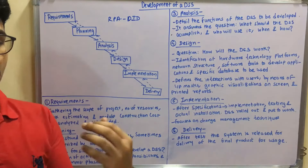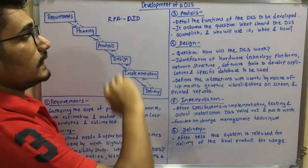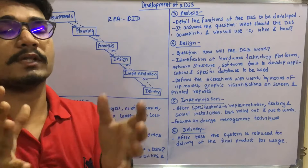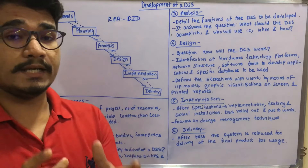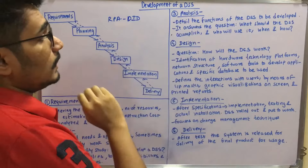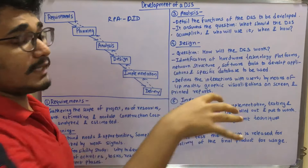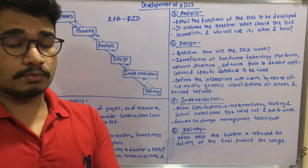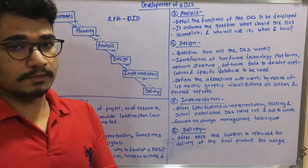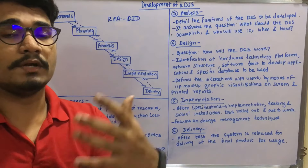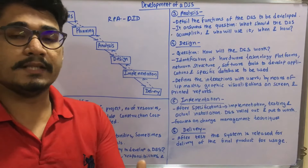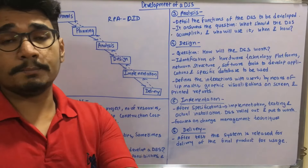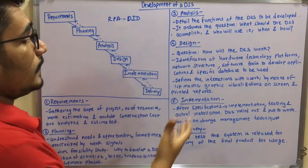In the Analysis phase, we have to analyze all the requirements. The detailed functions of the DSS have to be developed here — each of the models or functions with specific details. It answers the questions: what should the DSS accomplish after its development, who will use it, and how are they going to use it? These questions need to be answered during analysis, as knowledge workers may be questioning these things, and the organization or third-party developing the DSS should answer them.